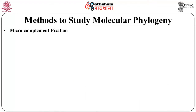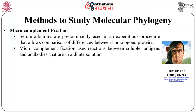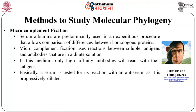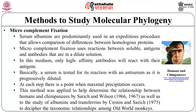Now let us see the microcomplement fixation method. Serum albumins are predominantly used in an expeditious procedure that allows comparison of differences between homologous proteins. Microcomplement fixation uses reactions between soluble antigens and antibodies in a dilute solution. In this medium, only high-affinity antibodies will react with their antigens. A serum is tested for its reaction with an antiserum as it is progressively diluted, and at each step there is a point when maximum precipitation occurs. This method was applied to help determine the relationship between humans and chimpanzees by Sarich and Wilson, as well as to the study of albumins and transferrins by Cronin and Sarich, to decipher the taxonomic relationships among old world monkeys.